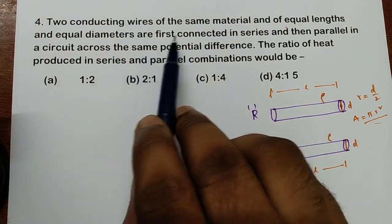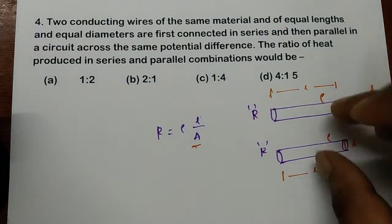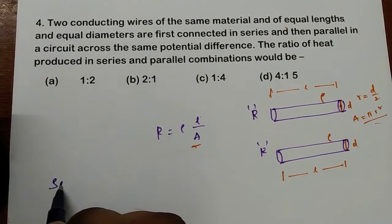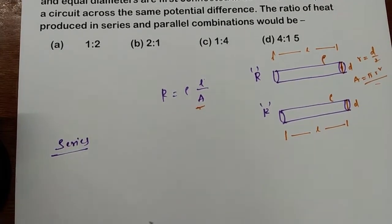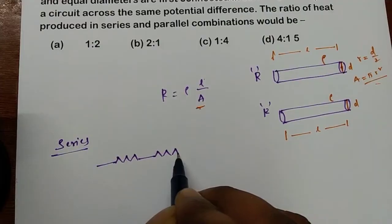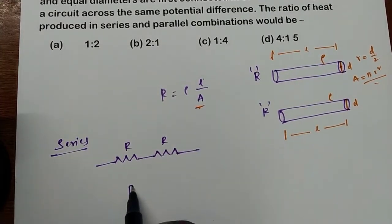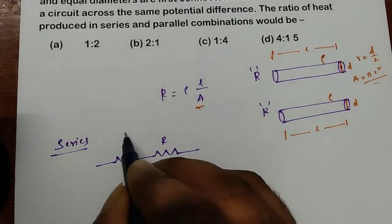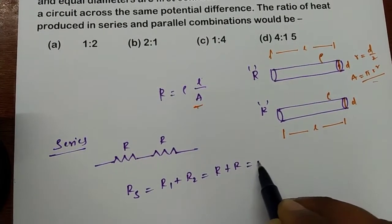These two wires are first connected in series. So we have two resistors in series, both of value R. The effective resistance in series is R1 plus R2, which equals R plus R, so R series equals 2R.